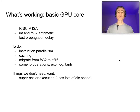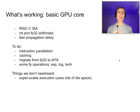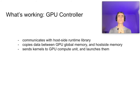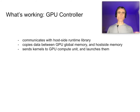Things we don't need or want. We don't want superscalar execution because it uses absolutely tons of die space. So we don't need out-of-order, micro-operations, or any of those things — that's gone. The GPU core is relatively simple because it needs to take up a small die area; we're going to have thousands of these on the GPU die. The GPU controller sits on the die, communicates with the host-side runtime library, handles copying data between GPU global memory and host memory, and sends and launches kernels to the compute unit. That's working today.